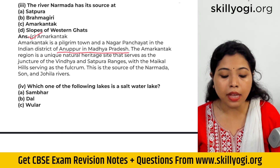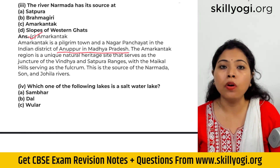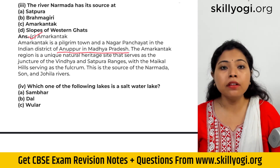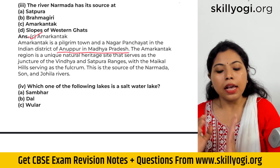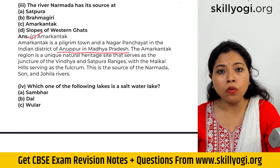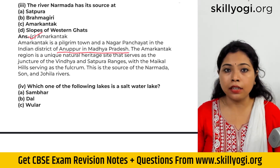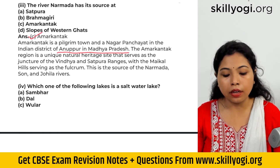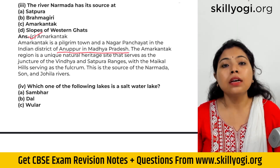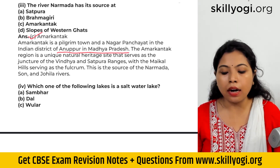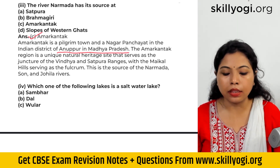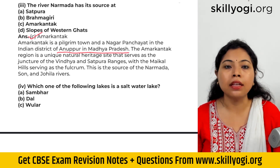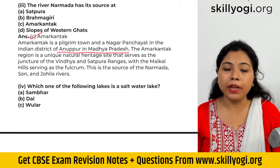It is important to note that among all the western peninsular rivers, only Narmada and Tapi flow from east to west, ending their journey in the Arabian Sea.